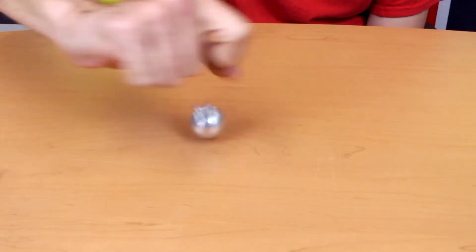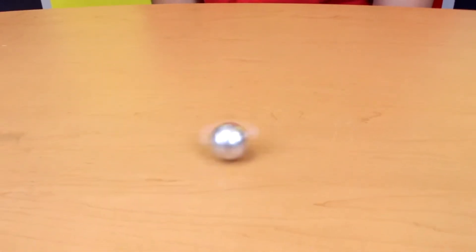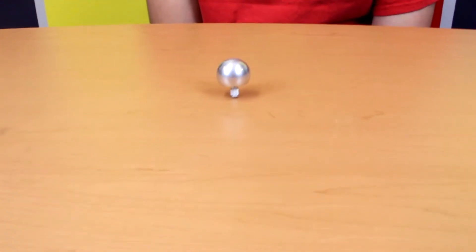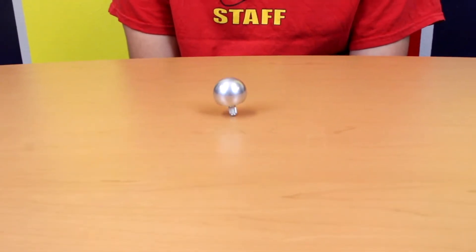This thing right here is called the tippy top. It's just a toy, but how it worked stumped physicists for decades. You can start spinning it with most of its weight at the bottom, but eventually it'll flip over and most of the weight will be at the top.